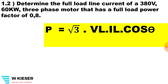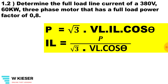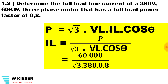Determine the full load line current of a 380 volt, 60 kilowatt three-phase motor that has a full load power factor of 0.8. Because it's a three-phase motor we're dealing with square root 3 inside our equation. To manipulate the equation to get the full load current on its own, it'll be power over square root 3, the line voltage, and the power factor. The power multiplied by 1000 gives us 60,000 watts divided by square root 3, the line voltage of 380, and a power factor of 0.8. Therefore the full load current is 113.95 amps.